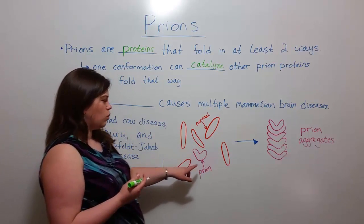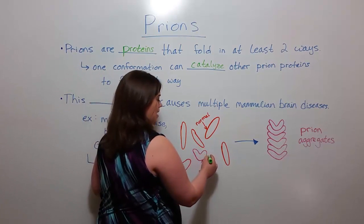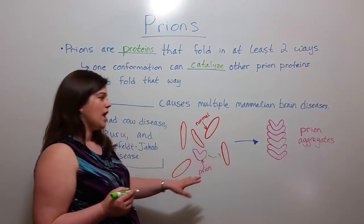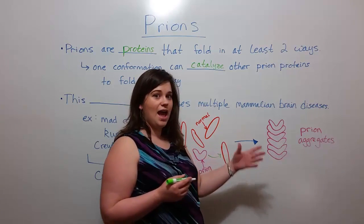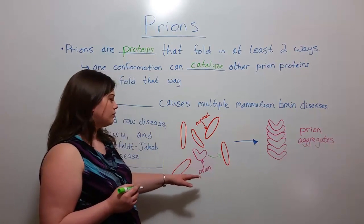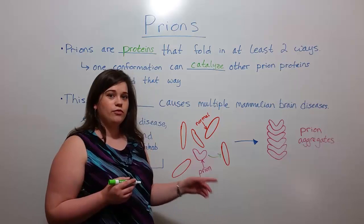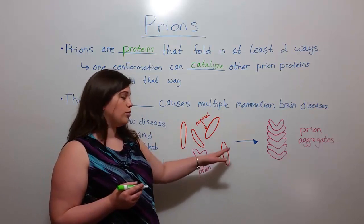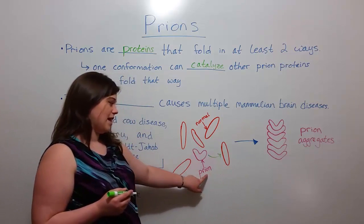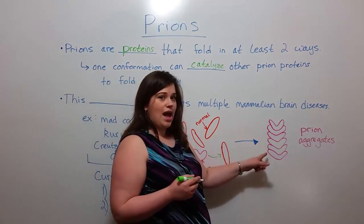Once one of these prion proteins is present, it can catalyze a change in shape of a normal protein. This results in protein aggregates — specifically aggregates of the prion protein. Basically, one prion protein catalyzes a change in shape for a normal protein, resulting in lots of prion proteins with this particular shape instead of the normal shape, and then they begin to aggregate.